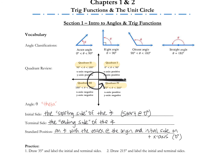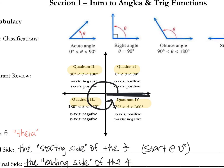The initial side is the starting side of the angle; the terminal side is the ending side of the angle. So typically when we're graphing angles, we always start at zero degrees — zero degrees is right here, where we always start, and then we rotate counterclockwise around the quadrants. I also want to label here so it's a little bit easier. This is zero degrees.